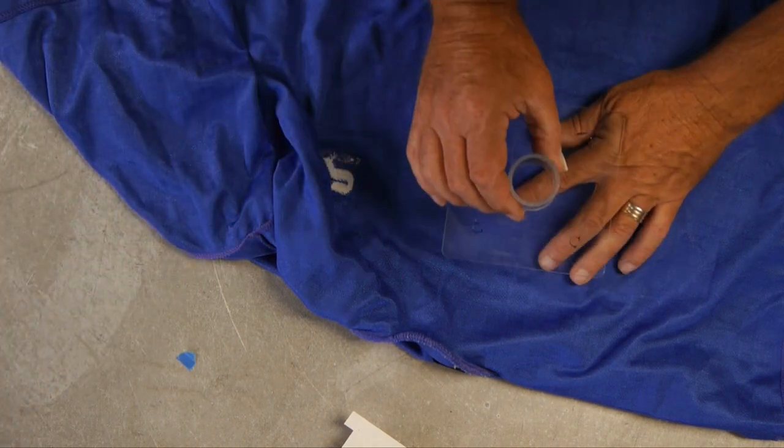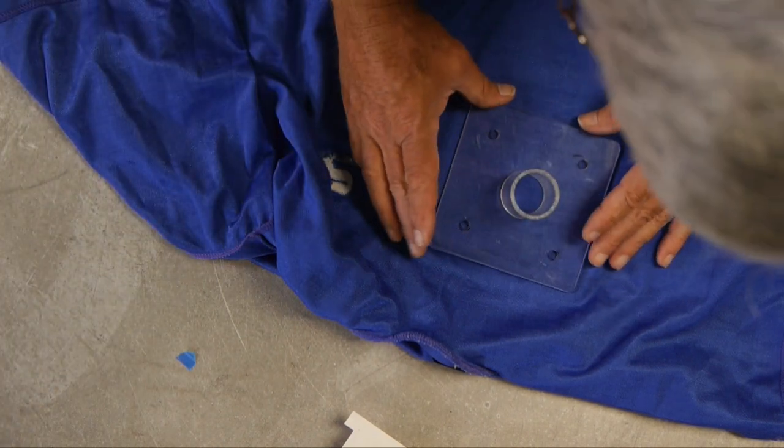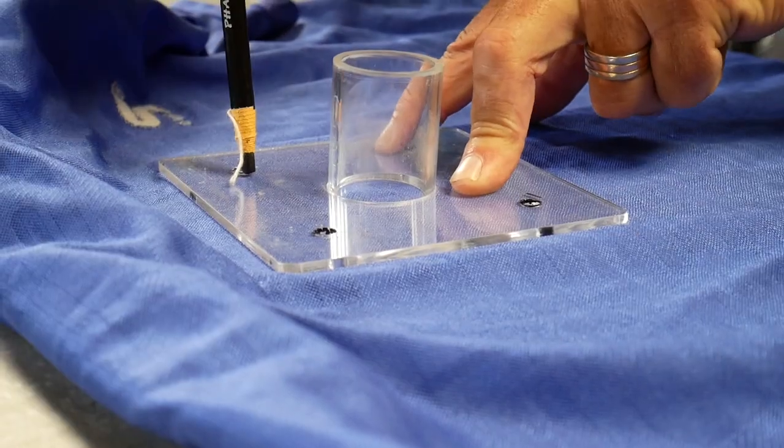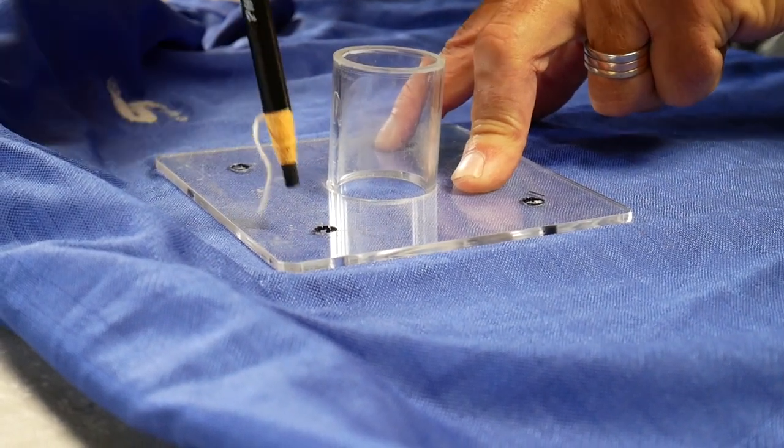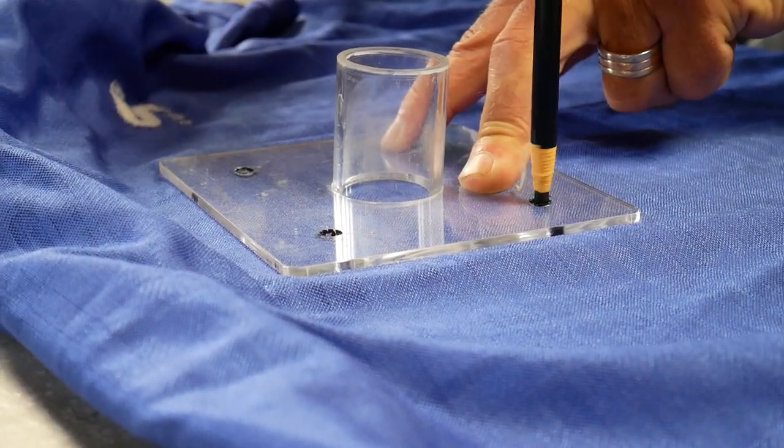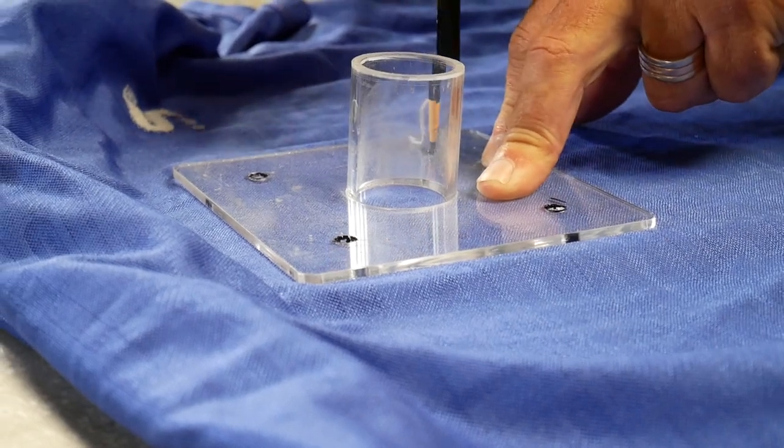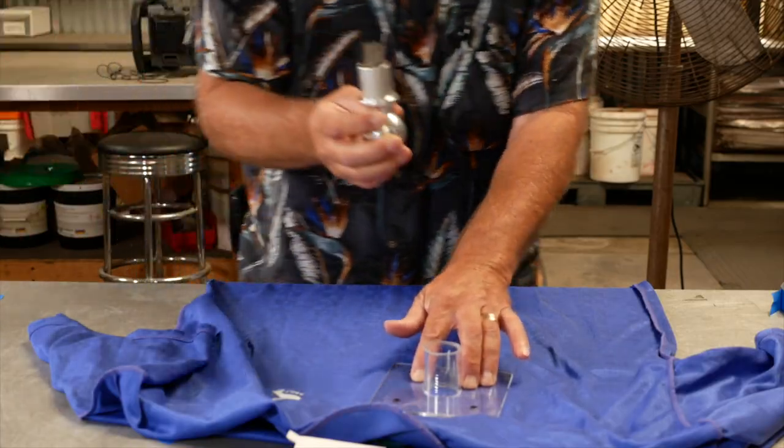Place the scoring guide tool over the center of the hit location. Using the grease pencil, place light marks on the wardrobe using the registration holes provided on the scoring guide. These marks will be used to center the Hit cup on the wardrobe.